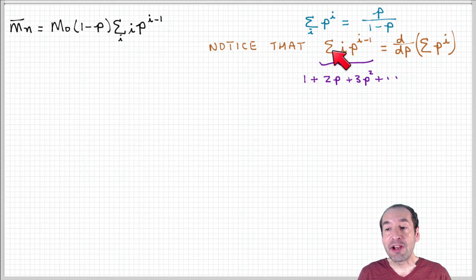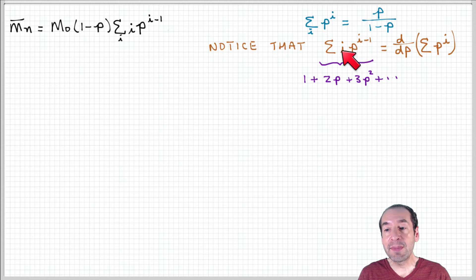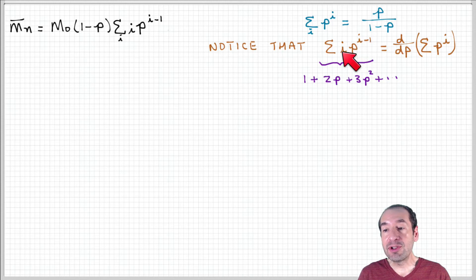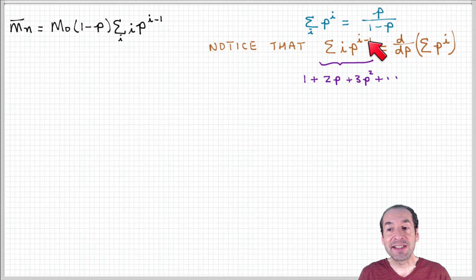The summation of i times p to the i minus one, which appears in our number average molecular weight equation, is actually the derivative of the summation of p to the i. You can see this by looking at the terms: when i equals one, we get one times p to the zero, which is one; when i equals two, we get two times p to the one, giving two p; plus three p squared, and so forth. This is exactly what you get when you take the derivative of p to the i — you get i times p to the i minus one. It's the same thing.